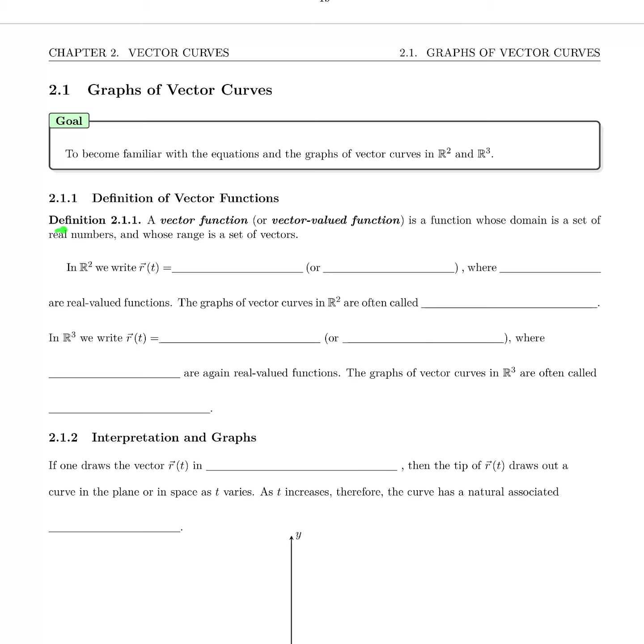So let's read definition 2.1.1. A vector function or vector-valued function is a function whose domain is a set of real numbers and whose range is a set of vectors.